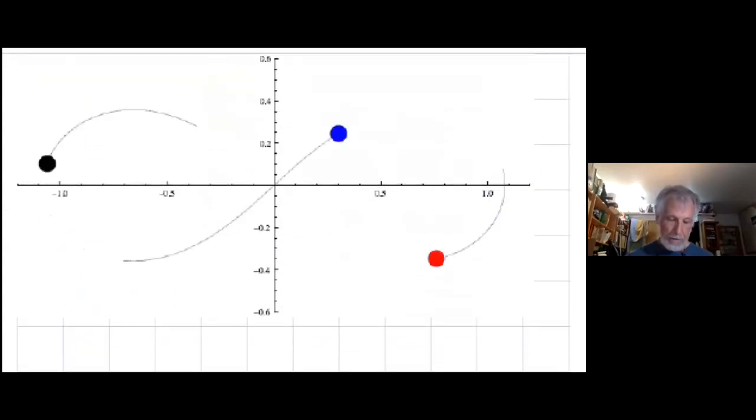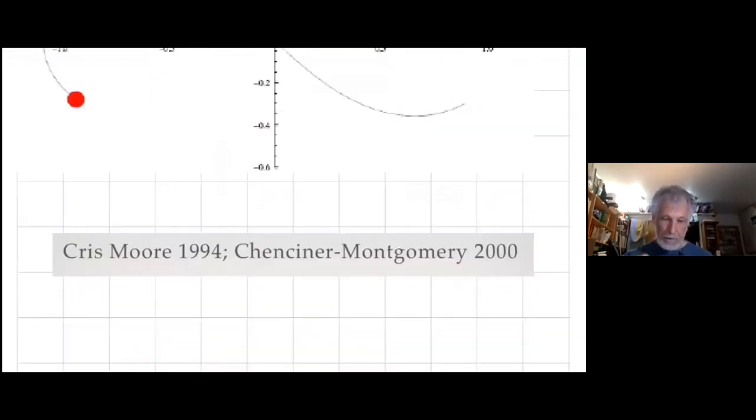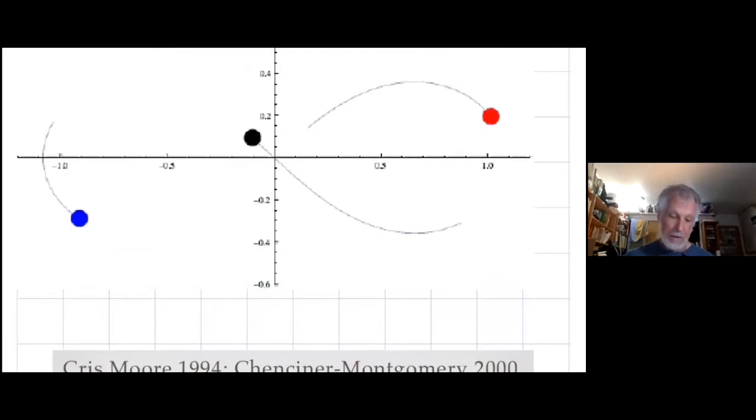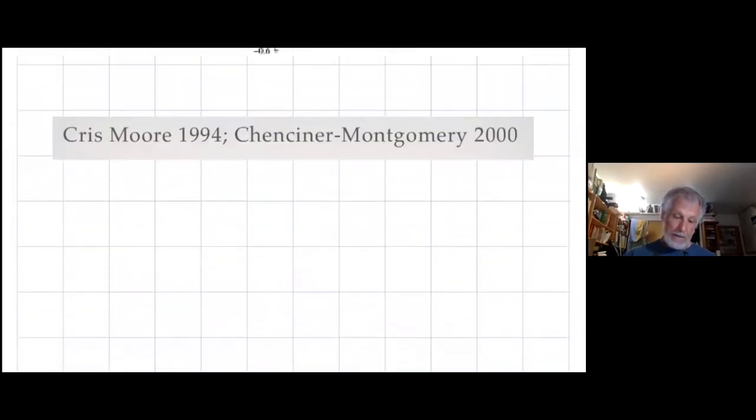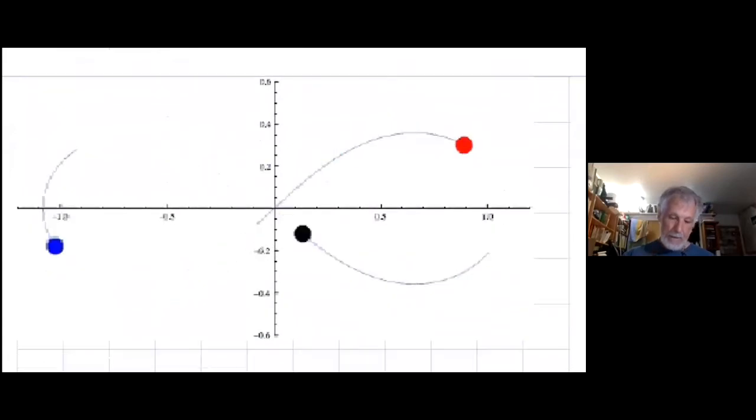This is the reason that I'm known in this game. This is called the figure eight orbit. It was discovered, as far as we know, by Chris Moore. There's a slight chance Lagrange knew about it. But as far as we know, it was discovered by Chris Moore in 1994. Alain Chenciner and myself rediscovered it in 2000. It's what's called KAM stable, periodic orbit for three equal masses. They chase each other around a figure eight. At every instant, this solution has zero angular momentum.